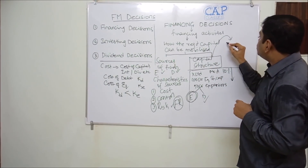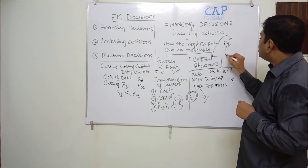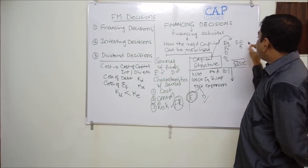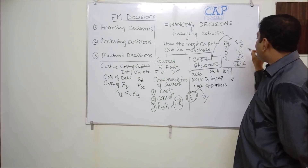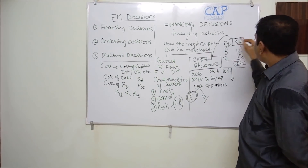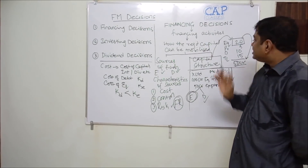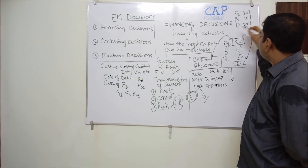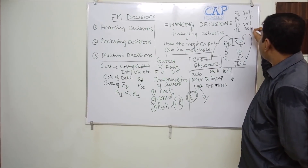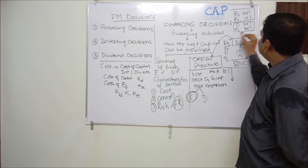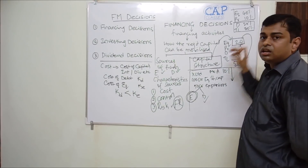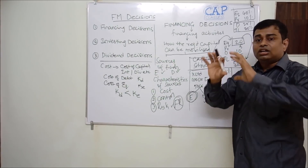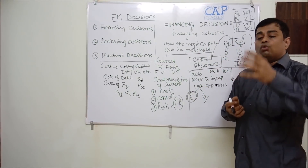Capital structure refers to the proportion of various sources. For example, out of 50 crore rupees of total capital required: 20 crore by equity, 5 crore by preference shares, 10 crore by debentures, and 15 crore by term loans. The proportion of each source in total capital is called capital structure. In this example, equity constitutes 40%, preference 10%, debentures 20%, and term loans 30% — or broadly, equity 50% and debt 50%.